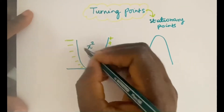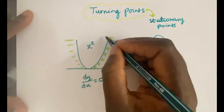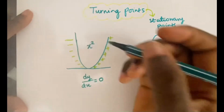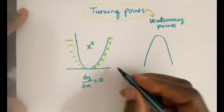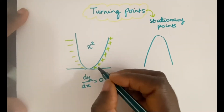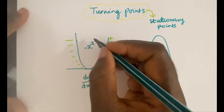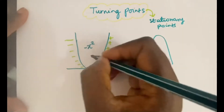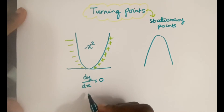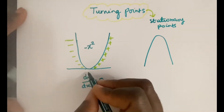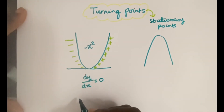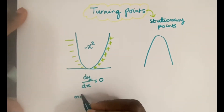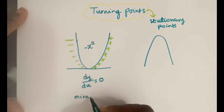For this type of curve — using a quadratic as an example — for a positive x squared, we would have a minimum point. This would be a minimum point.